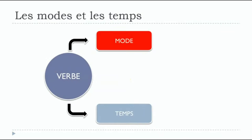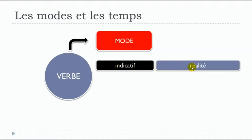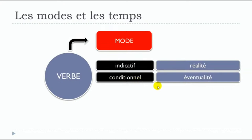So let's see now les modes. In French, the first one we will see together in the coming lessons will be l'indicatif. L'indicatif is used to express reality, so what is really happening. Then we'll have le conditionnel, which we will use to express what we call l'éventualité — something that might happen.